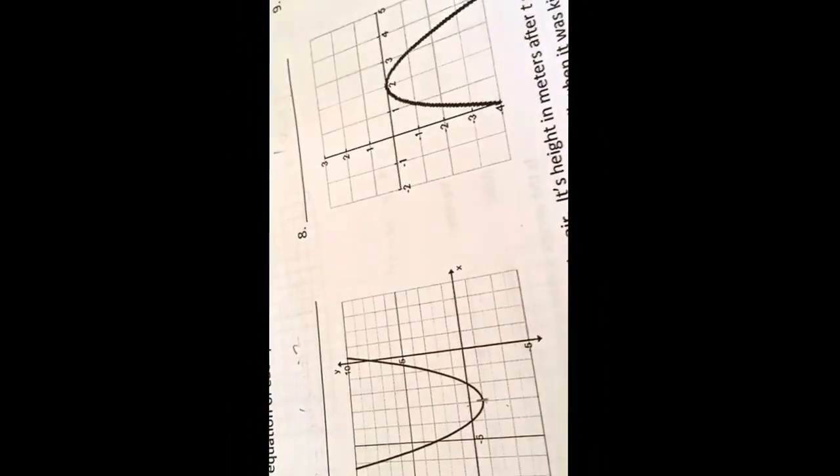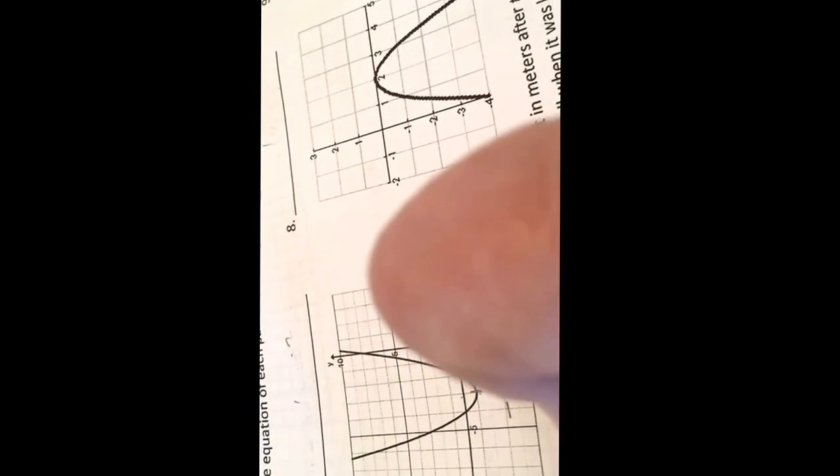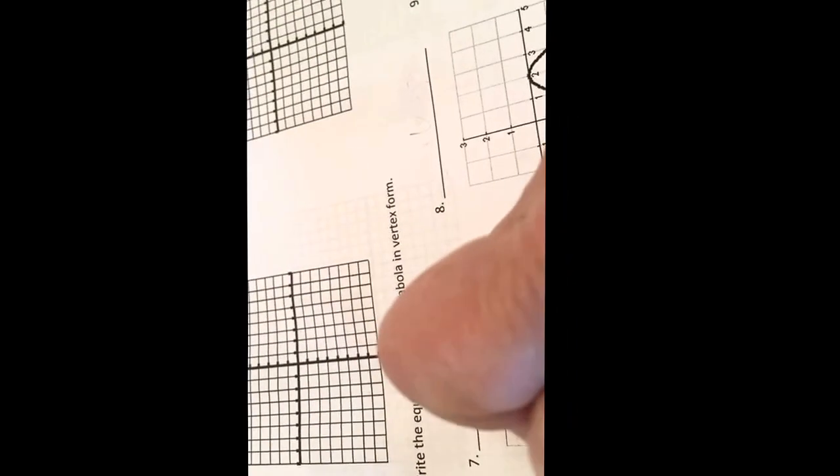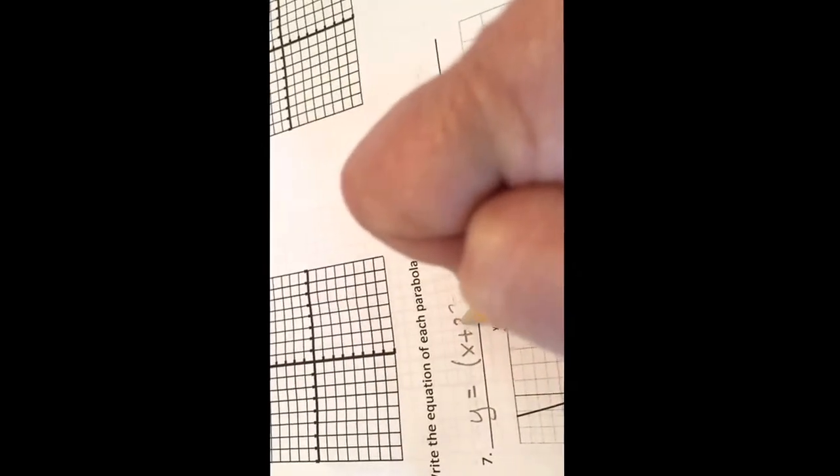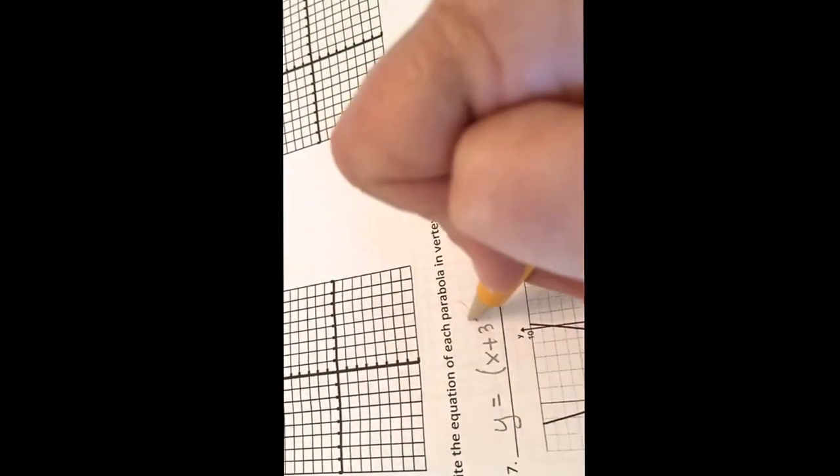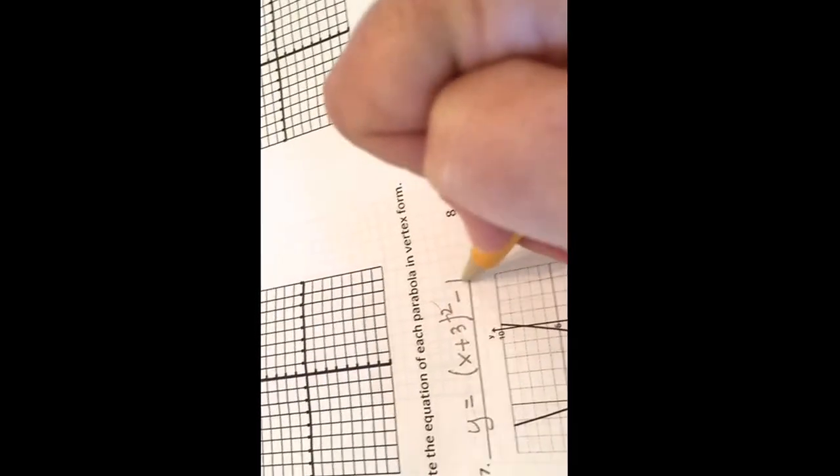My vertex is at negative 3, negative 1. So I'm going to write my equation. y equals x plus 3 squared minus 1.